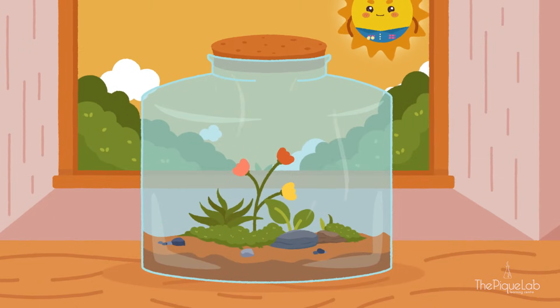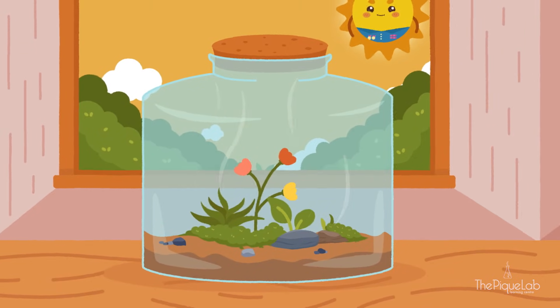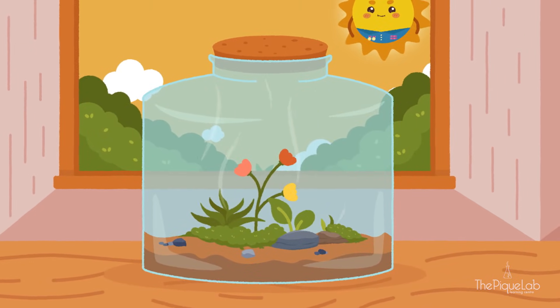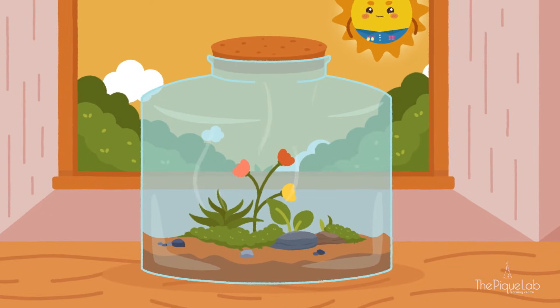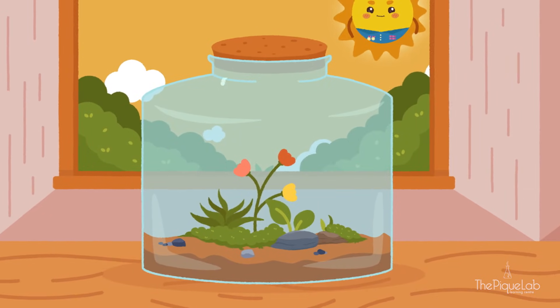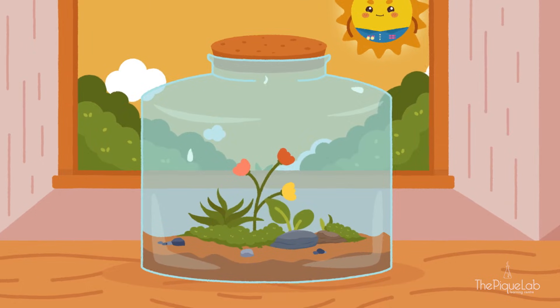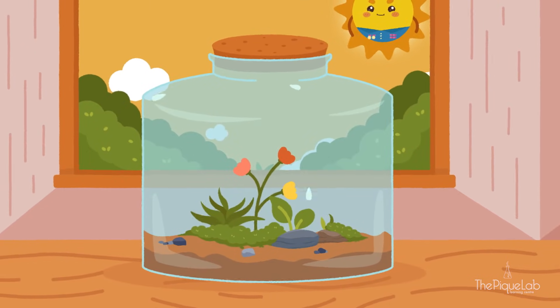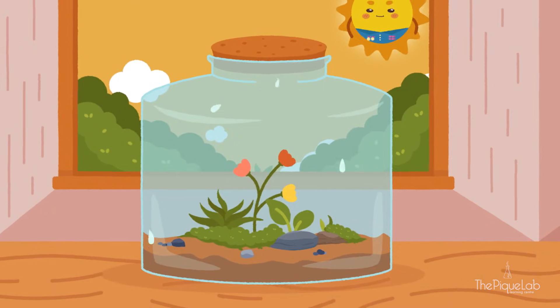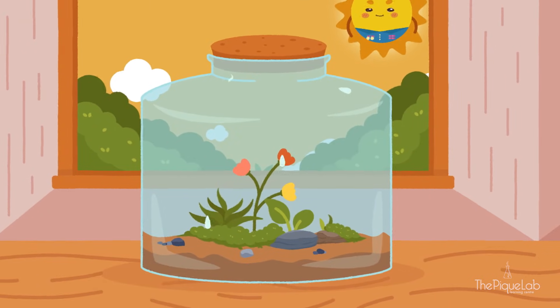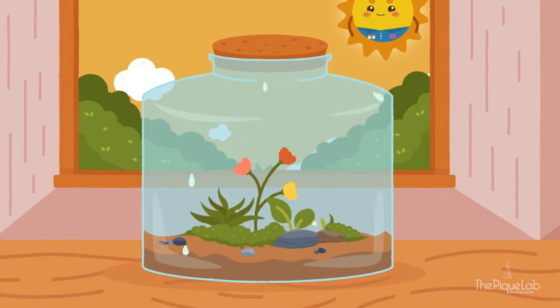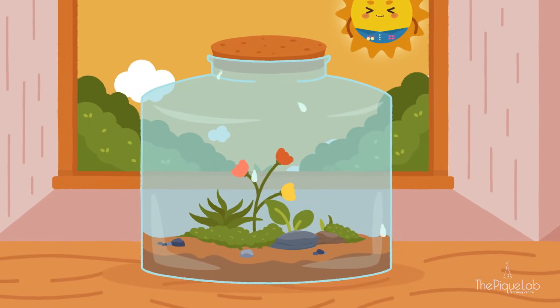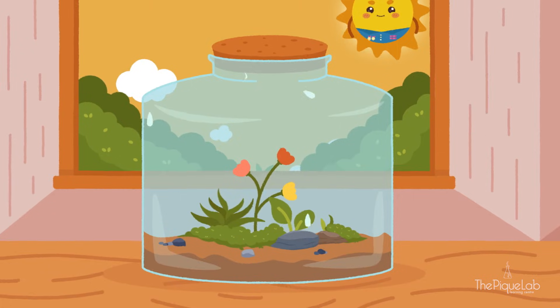The warmer water vapor then rises and comes into contact with the cooler inner surface of the terrarium, loses heat to it, condenses and forms water droplets. These water droplets then drip back into the soil, keeping it wet and the cycle repeats itself. Because of the water cycle that happens in the terrarium, the plants get a constant supply of water and will not die even if they are not watered for a few weeks. Isn't the water cycle just amazing?